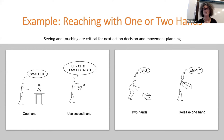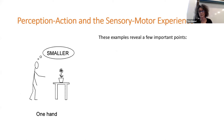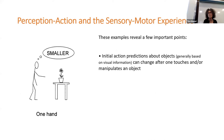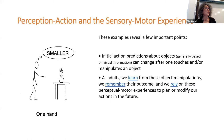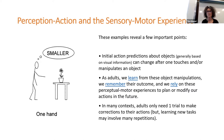What I want to illustrate with this example is a few important things. First, the initial action prediction based on visual information can change after you touch and manipulate the object. As adults, we learn from object manipulation, remember the outcome, and rely on these perceptual experiences to plan or modify future actions. Generally in adults, it takes about one trial to make that change — if you go back to move the flower pot again, the next time you'll do it with two hands because you remember you almost lost it.